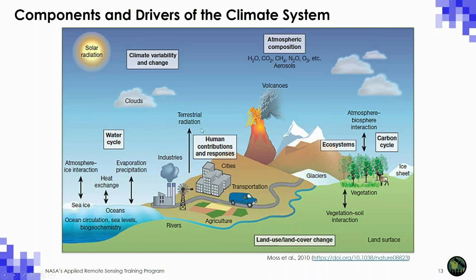The climate system includes the atmosphere — its chemical composition, clouds, sunlight, temperature, and rainfall — as well as the oceans, vegetation and biosphere, the ice and snow cryosphere, and land surface hydrology. Drivers of change include shifts in the sun, greenhouse gas emissions from industry or agriculture, deforestation, and volcanic eruptions that change aerosols and atmospheric chemistry. We are building models to understand how this system will respond to these driving changes.